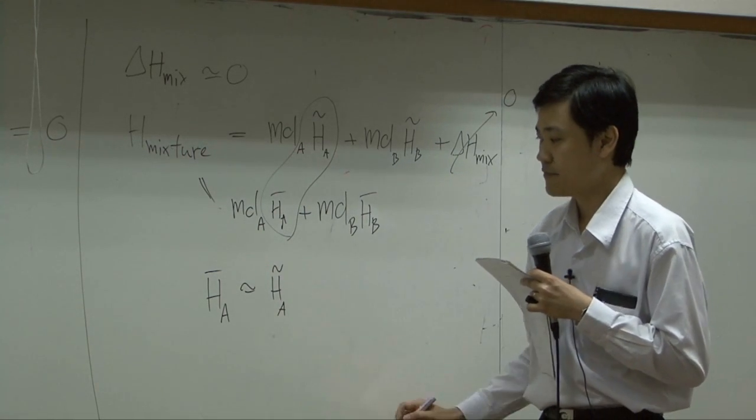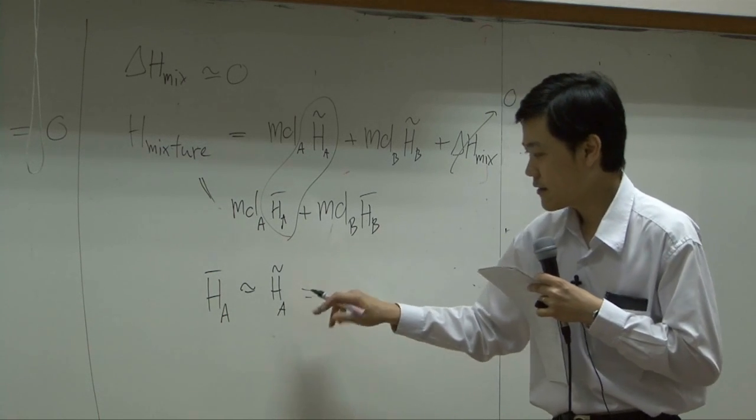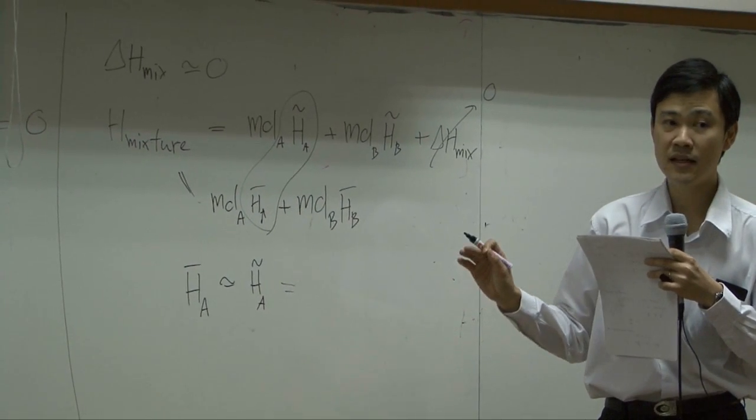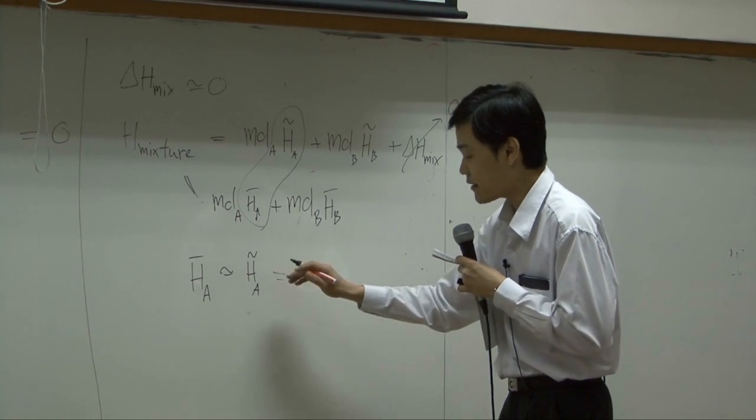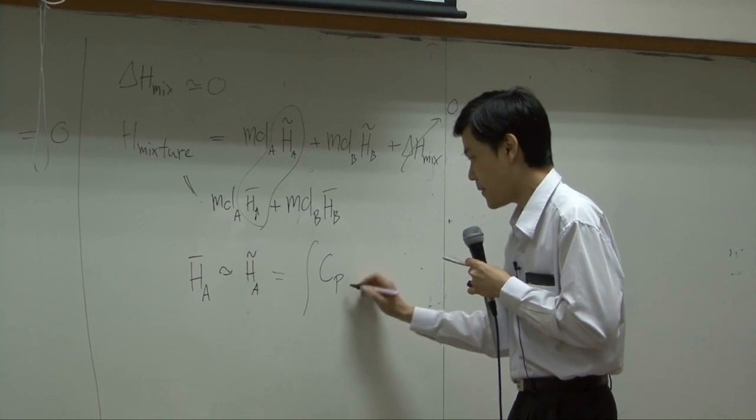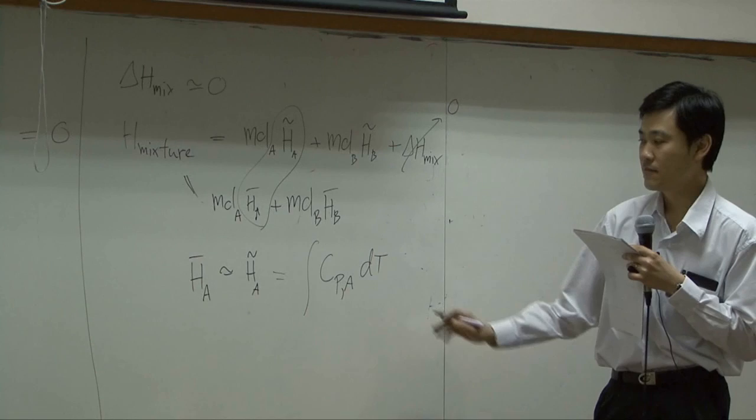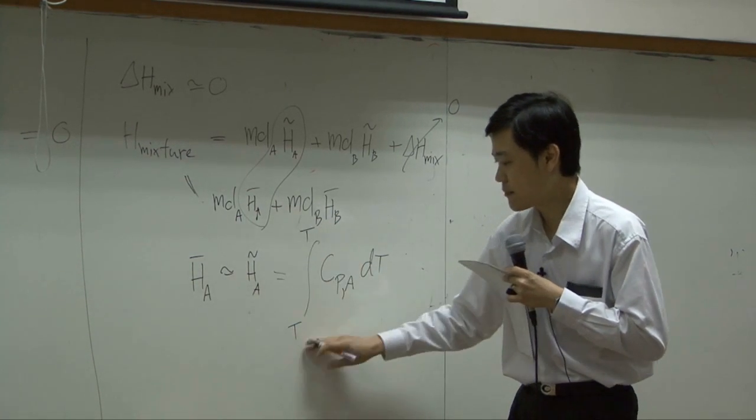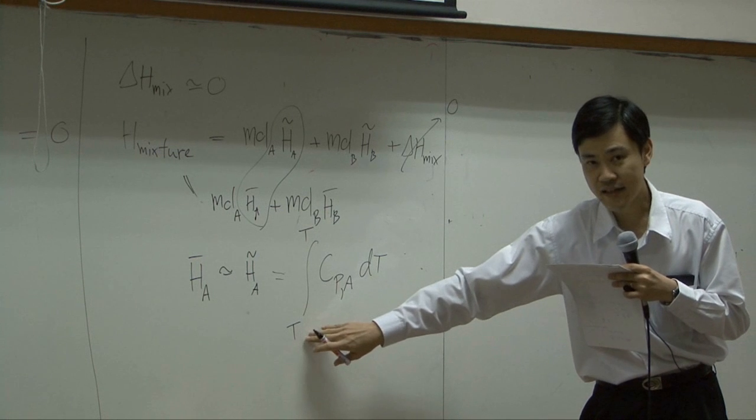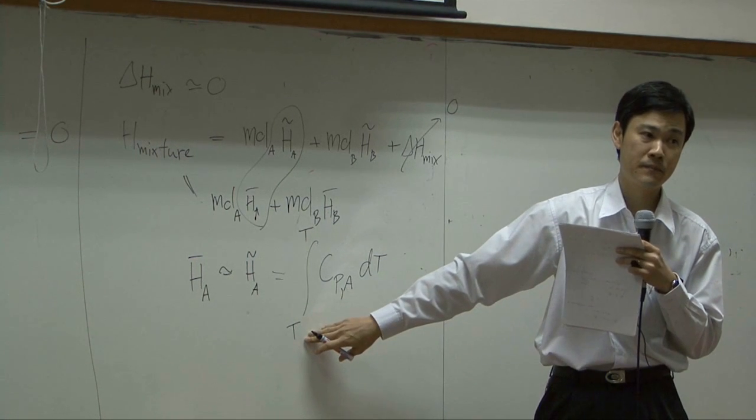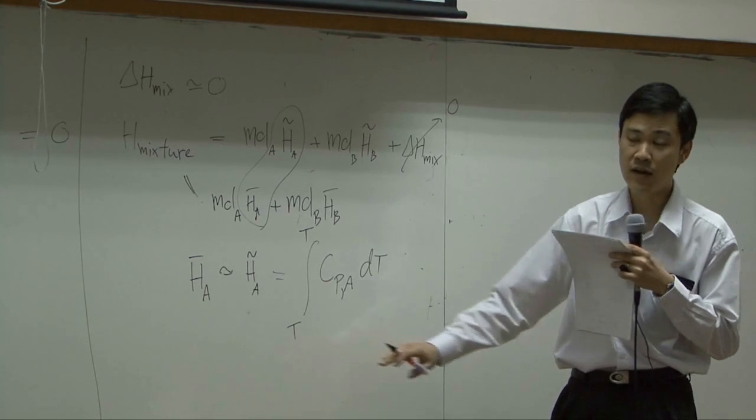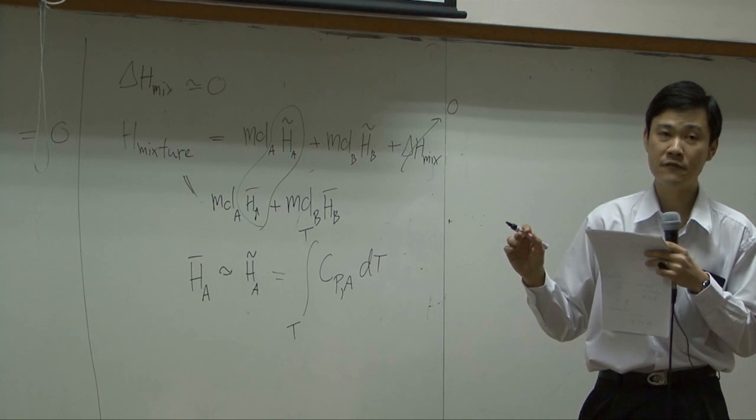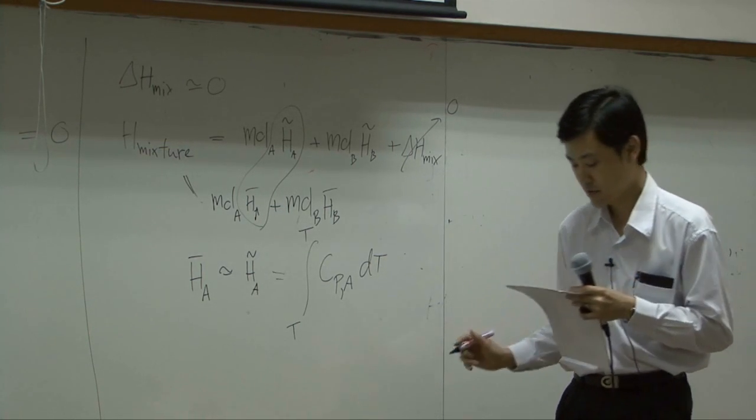If it is the same, then you can say that enthalpy of pure species A can be converted as a function of temperature by using heat capacity. And we know that enthalpy of species A would equal to heat capacity of species A integrated by DT. And integral usually starts from somewhere from one temperature to another. What is this temperature? What is this temperature? Reference temperature. Because enthalpy is not absolute. It's relative amount. So we can choose any relative reference temperature. Let's call this T0.